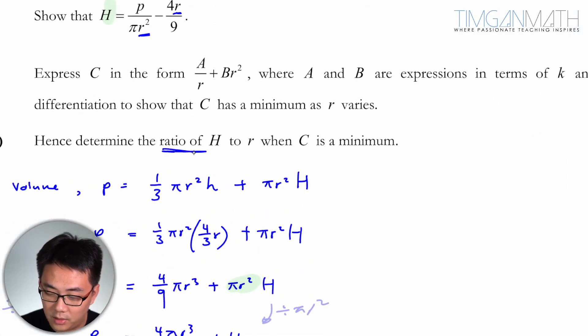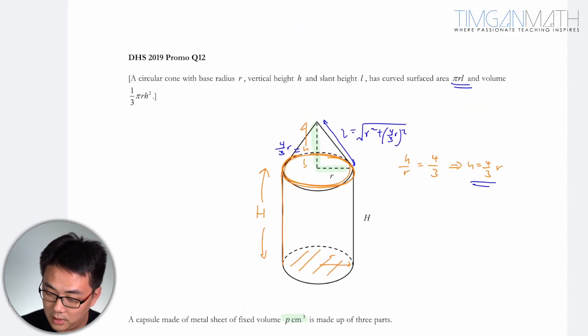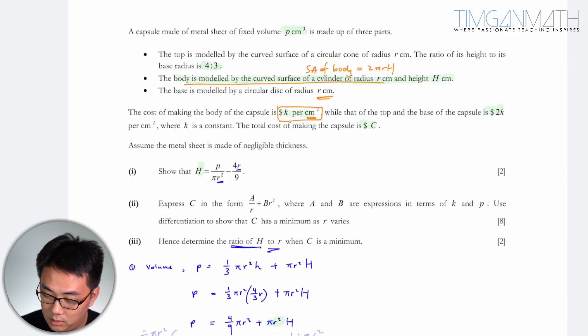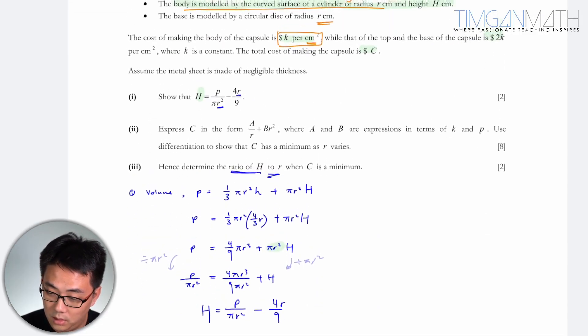Then the last part has to give me the ratio of H to R when C is minimum. H is this H here to R, the ratio.